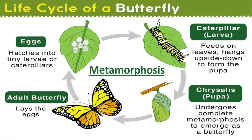Let us revise the life cycle of a butterfly once again. The first stage is the egg stage. The egg hatches into a tiny larva or caterpillar. The caterpillar feeds a lot, especially on leaves, and then it forms a pupa. It then undergoes complete metamorphosis to emerge as a butterfly. Finally, the adult butterfly again lays eggs and the same process continues. This whole life cycle process is known as metamorphosis.